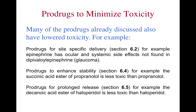There have been some cases where prodrugs have been made to minimize toxicity, and many of the prodrug examples already discussed already have the property of lower toxicity. For example, prodrugs for site-specific delivery: ephedrine has ocular and systemic side effects not found in dipivalyl ephedrine used for glaucoma. The prodrug to enhance stability: the succinic acid ester of propranolol is less toxic than propranolol. Also, prodrugs for prolonged release: the decanoic acid ester of haloperidol is less toxic than haloperidol because there is much slower release, the rate is kept constant, and dosage levels are kept constant.